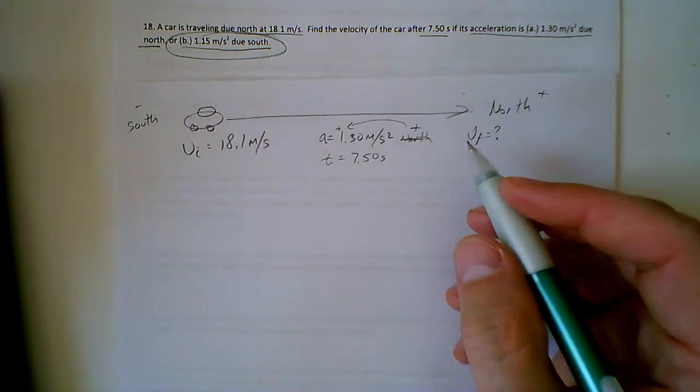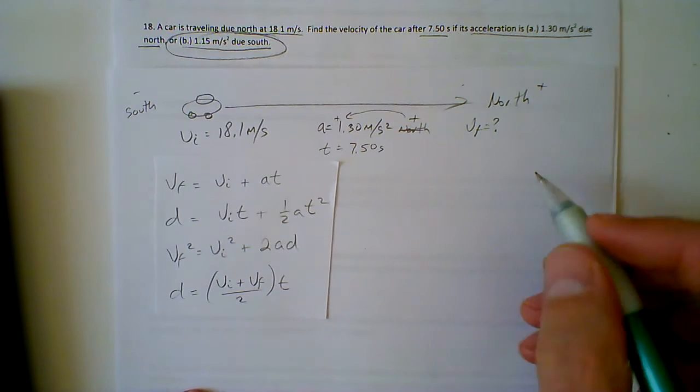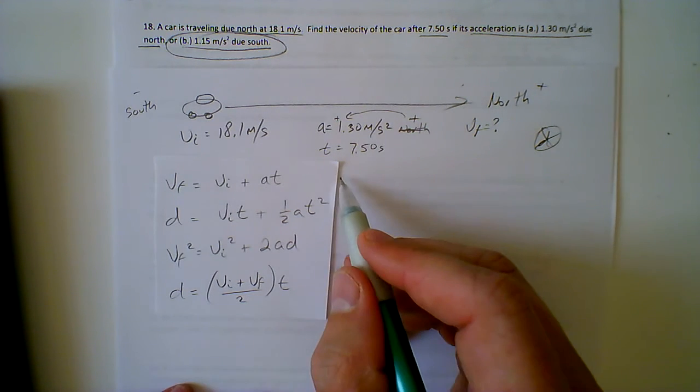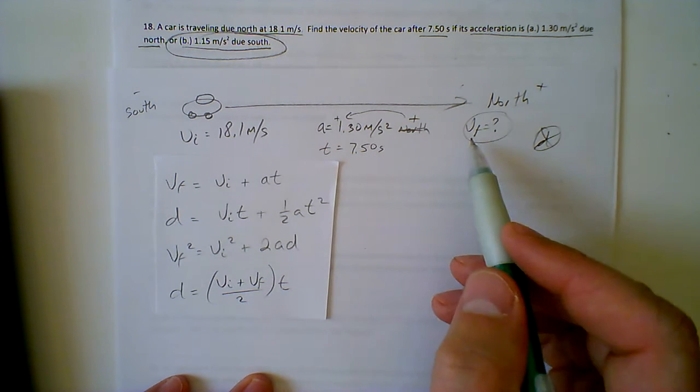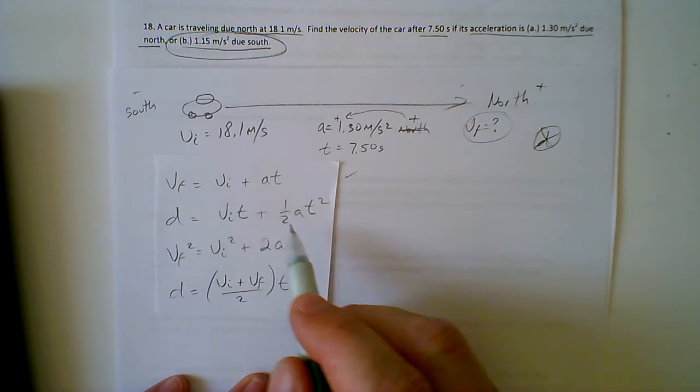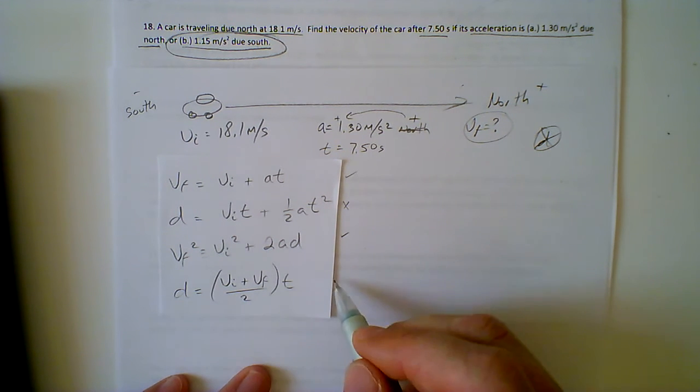So we want to figure out our equation. When picking our equation, we're not even concerned with d. We want to find an equation that has vf, we need to solve for vf. The first one does, so that's good. The second one doesn't, third one does, fourth one does.